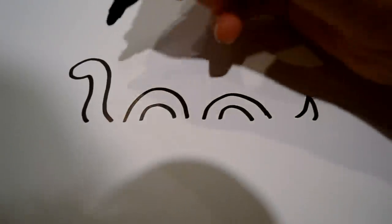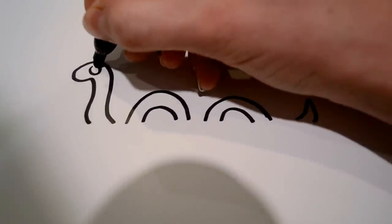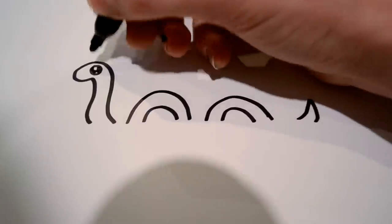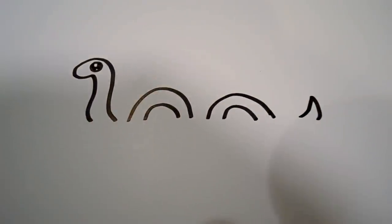And then from there you're going to want to draw the eye, which is just... I like to draw a circle, a smaller circle inside it, and then a smaller circle under it, and fill in the rest black.